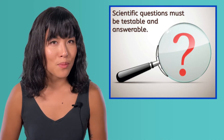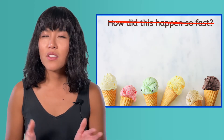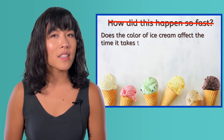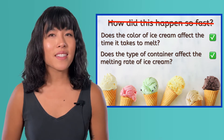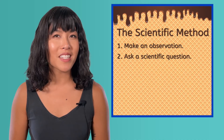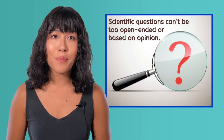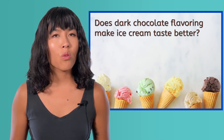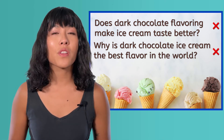You ask yourself frantically, how did this happen so fast? And although that's a question, it's not a scientific question. Scientific questions must be testable and answerable. A good scientific question would be: does the color of ice cream affect the time it takes to melt? Or, does the type of container affect the melting rate of ice cream? Because we can test and answer both of these questions, they are considered scientific. We also can't ask questions that are too open-ended or based on opinion, such as does dark chocolate flavoring make ice cream taste better? Those types of questions don't make good science because they're answered with our opinions, not observations.